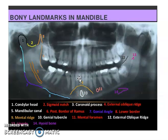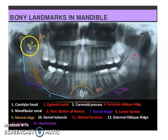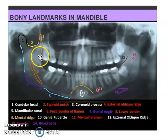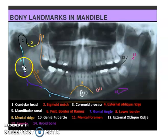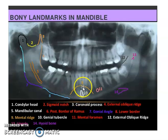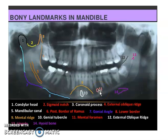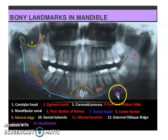In an OPG, number 2 indicates the sigmoid notch. Important bony landmarks in the mandible: number 1 is the condylar head, then sigmoid notch, coronoid process, external oblique ridge, mandibular canal, posterior border of ramus, gonial angle, lower border of mandible, mental ridge, genial tubercle, mental foramen. Remember, the mental foramen is most closely associated with the first premolar. Number 12 is the external oblique ridge, 13 is the lingula, and the hyoid bone is also identified.